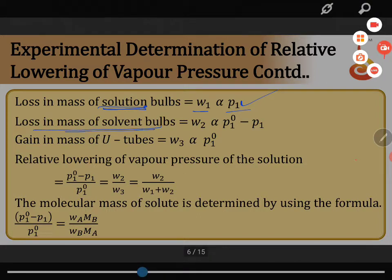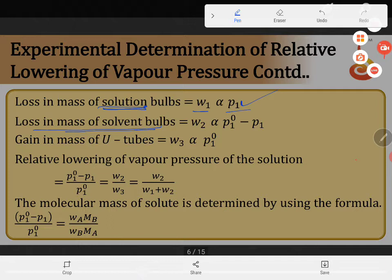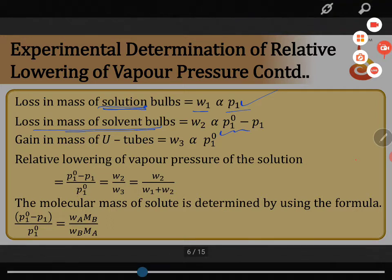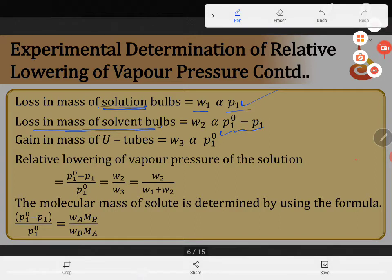Loss of mass in the solvent bulbs, W2 is proportional to the difference in vapor pressure of pure solvent minus vapor pressure of solution. Because in the solvent bulbs, after the air passes the solvent bulb, whatever it has absorbed in the solution compartment will not carry on. It will get subtracted from the pure solvent compartment.